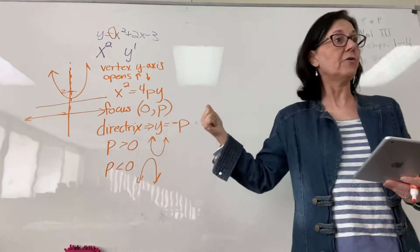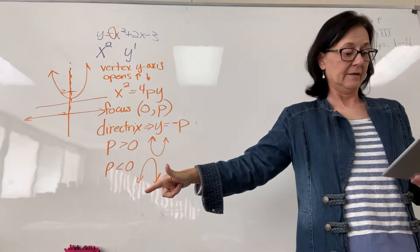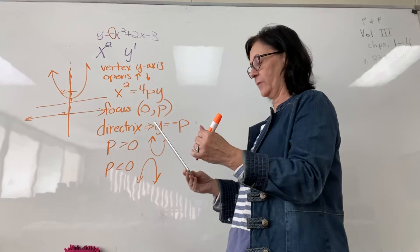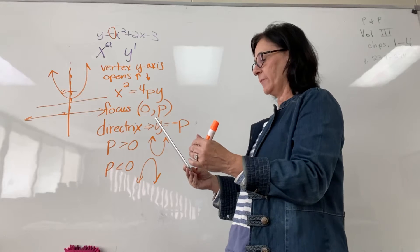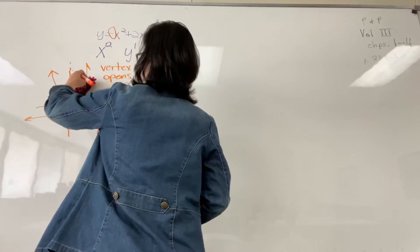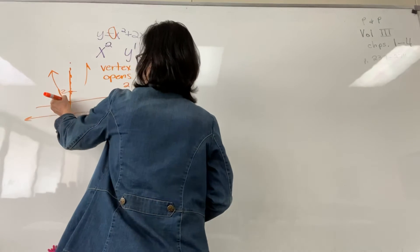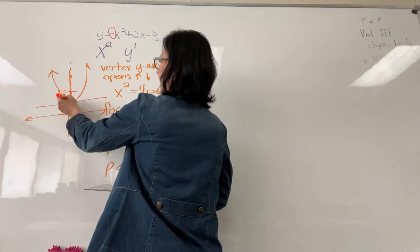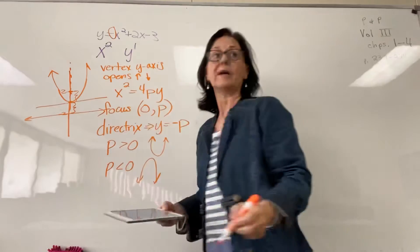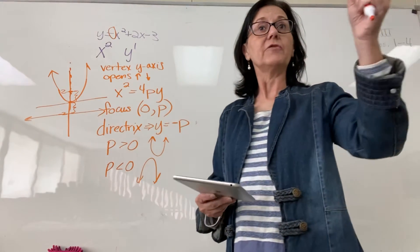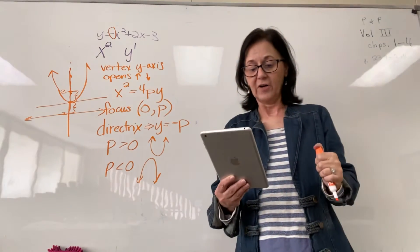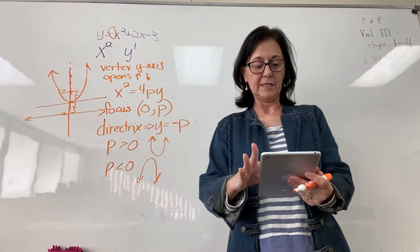The distance between the focus point and the directrix is always going to be 2p. So if you were given the focus point and the directrix, you could figure out where the vertex is. The distance from the vertex to the focus and the distance from the vertex to the directrix is p. Your vertex for your parabola is going to be the midpoint between your focus point and your directrix.